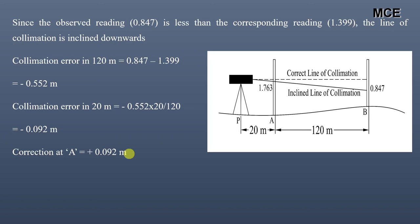So the correction at A will be plus 0.092 meters. The correct reading at A is the observed reading plus correction which equals 1.763 plus 0.092 which equals 1.855 meters.